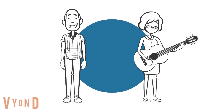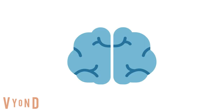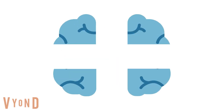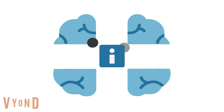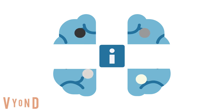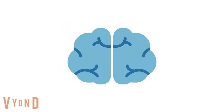So why is this? Memory is not just one function. We can split memory into different groups, with different types of information being remembered and stored in different ways in different parts of the brain. So what are some of these types of memory?